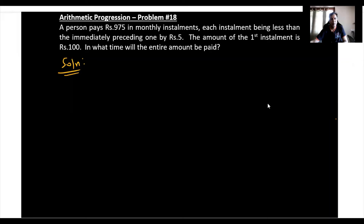The problem is: a person pays Rs. 975 in monthly installments, each installment being less than the immediately preceding one by Rs. 5. The amount of the first installment is 100. In what time will the entire amount be paid?